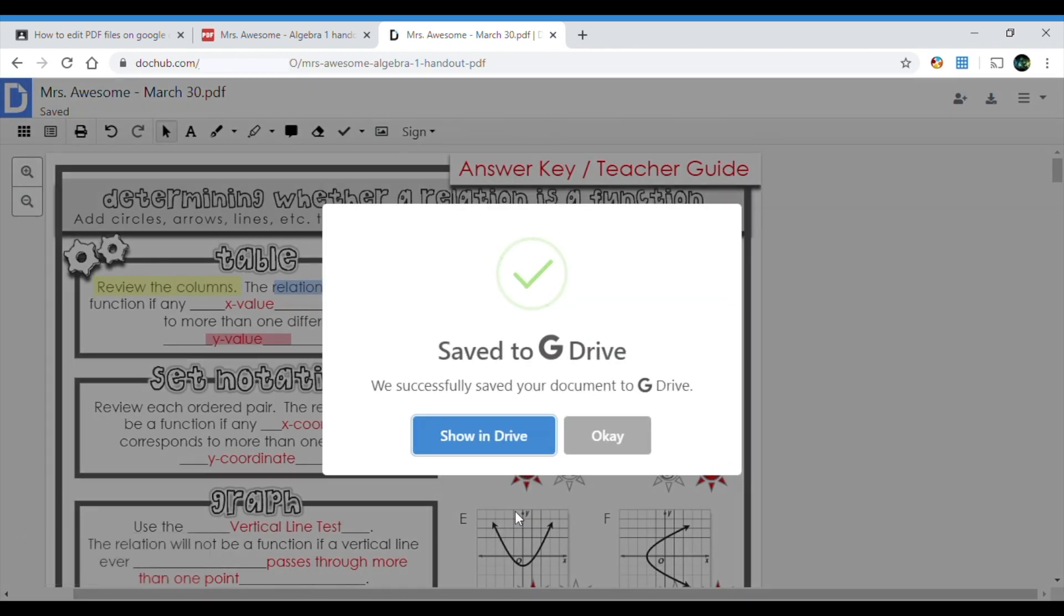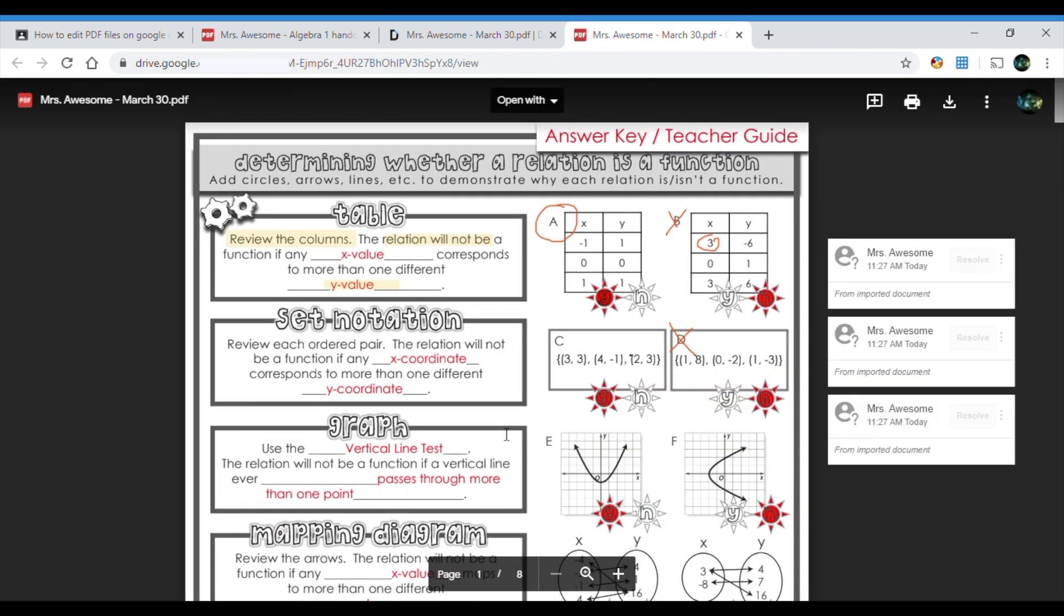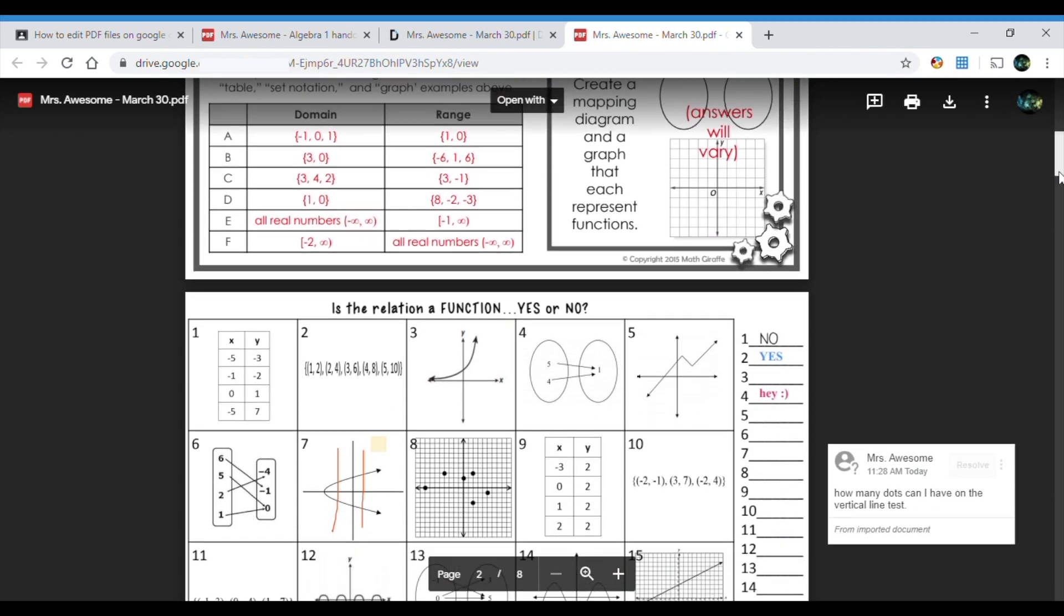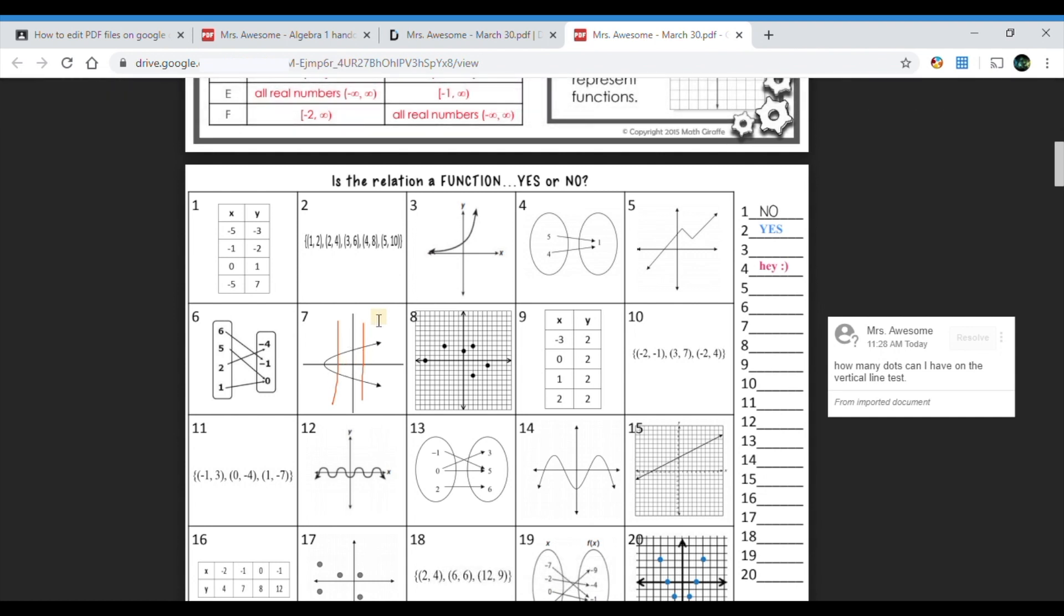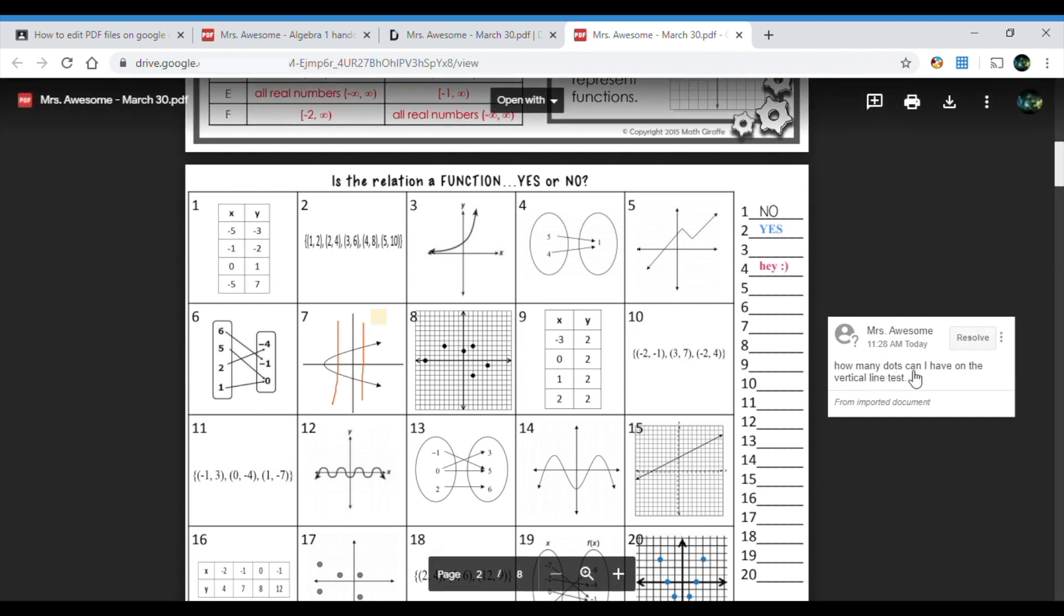Yay, guys, it saved my work. That's what's up. You can put okay to exit out or you can put show in Drive. Now, as you can see, my work has been saved. Ta-da! I still have my drawings and I still have my texts and I still have my lines and my comment is there. How many dots can I have on the vertical line test appears.